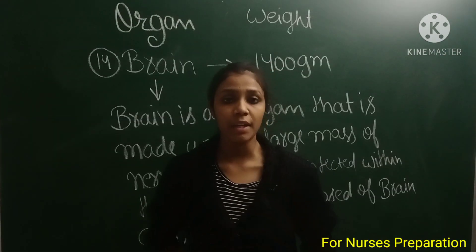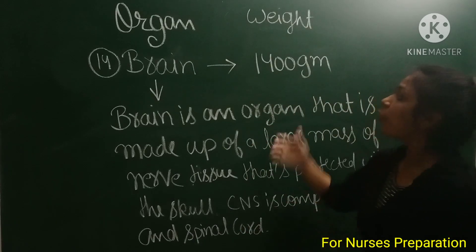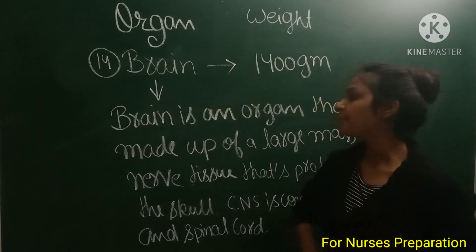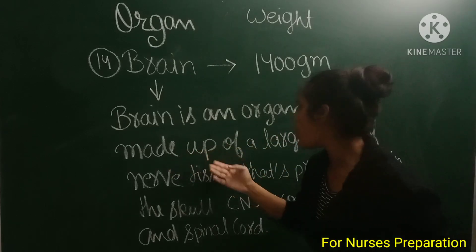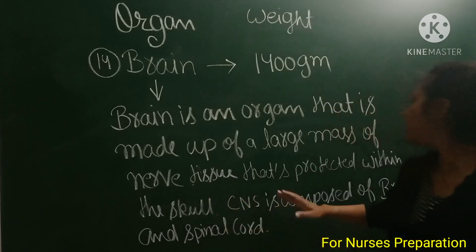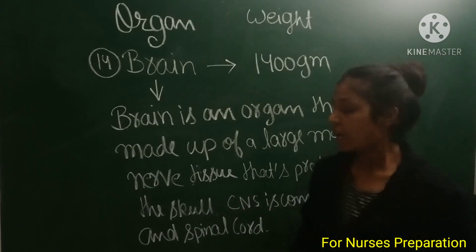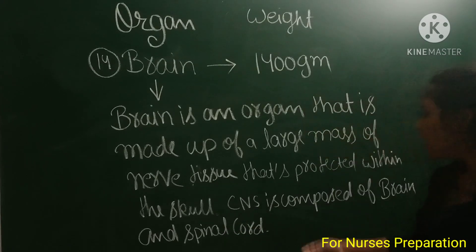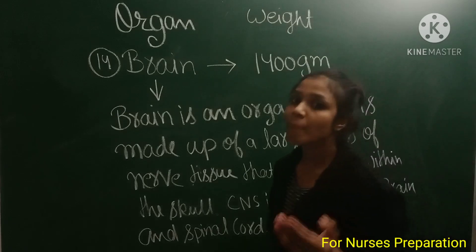Next organ is the brain. The brain consists of 1400 grams in weight. It is an organ made up of a large mass of nerve tissue protected within the skull. The central nervous system (CNS) is composed of the brain and spinal cord.